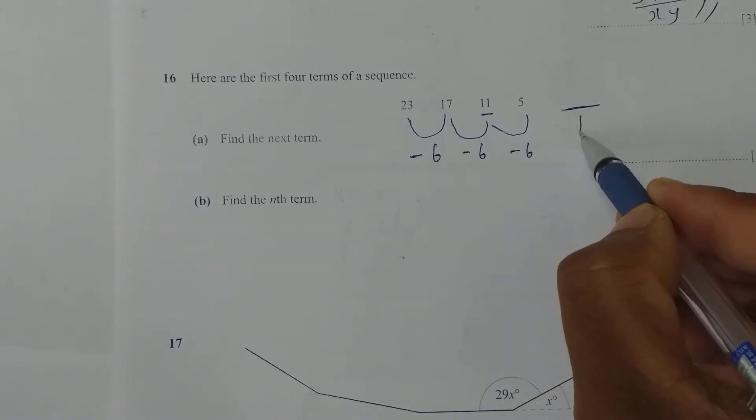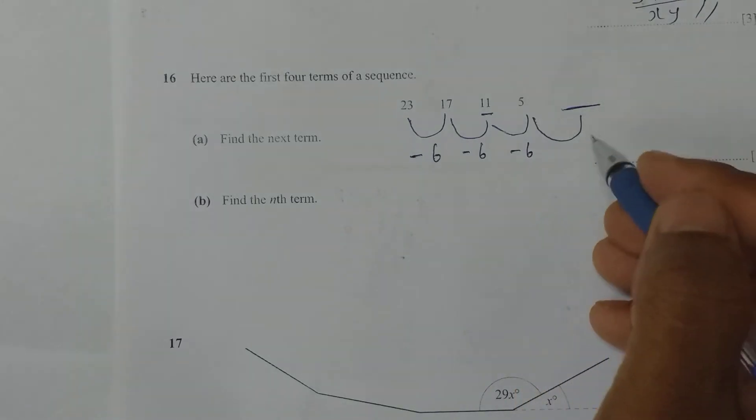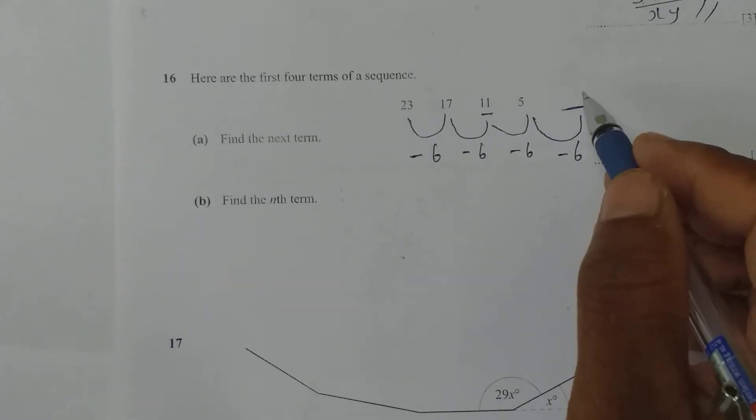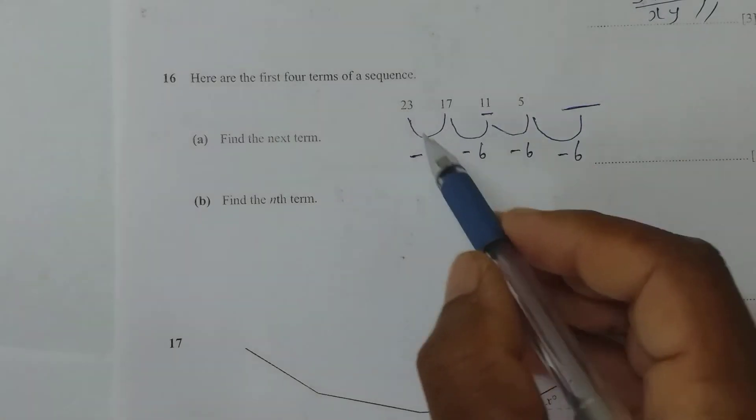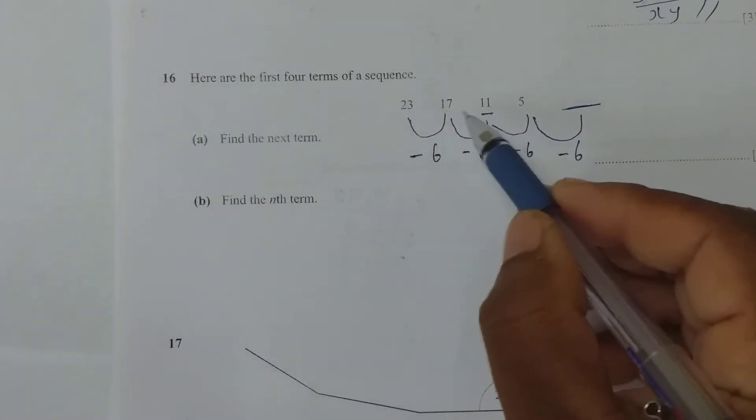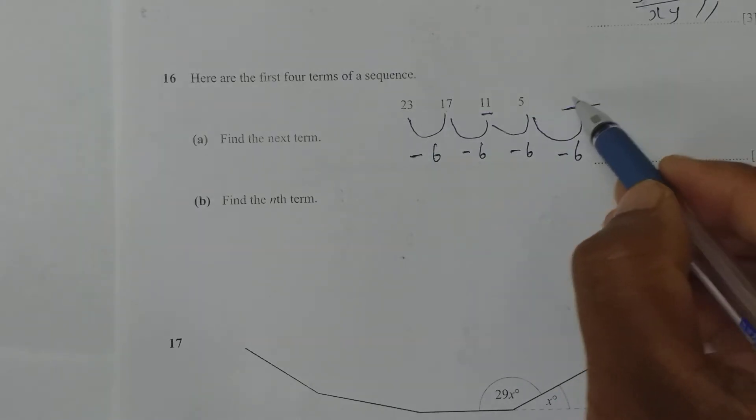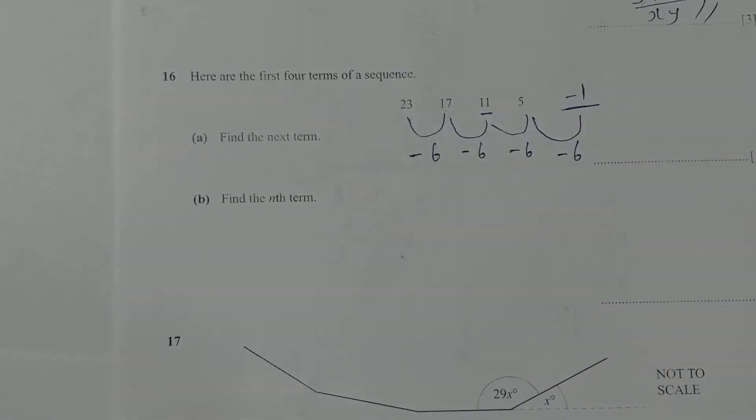Whatever number is here, you need to subtract 5 from it to get minus 6. So what number should be here? 5 minus 6 is minus 1. This is the next number, minus 1.